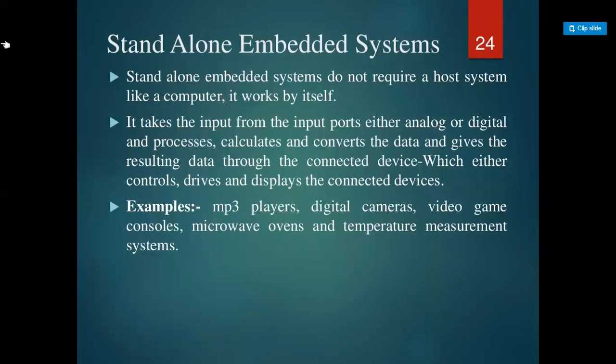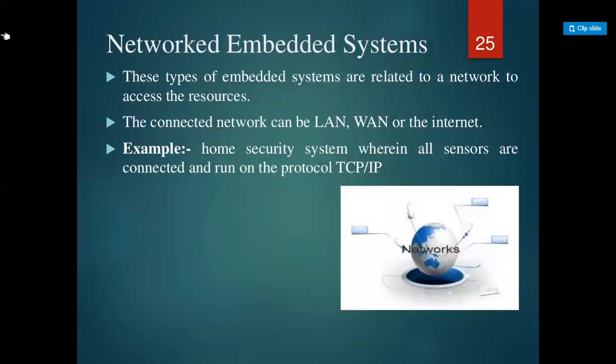Standalone embedded systems do not require a host system like a computer — they work by themselves. They take input from input ports, either analog or digital, process and calculate the data, and give the resulting output through a connected device such as a display or control device. Examples include MP3 players, digital cameras, video game consoles, microwave ovens, and temperature measurement systems. Network embedded systems are connected to a network such as LAN, WAN, or the internet; an example is a home security system running on TCP/IP protocol.